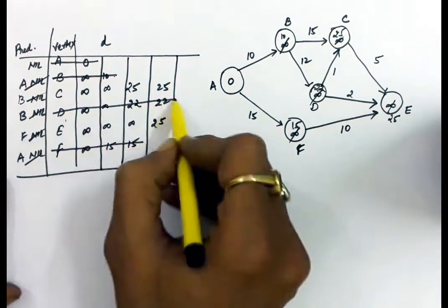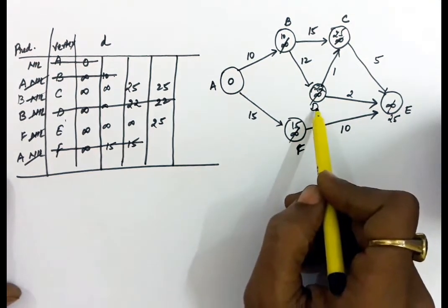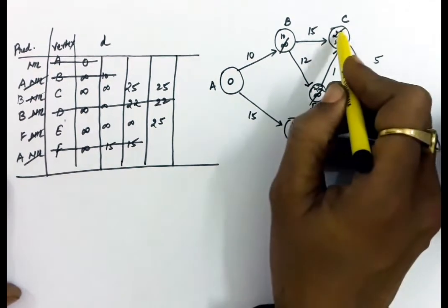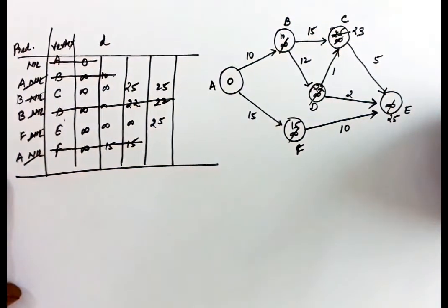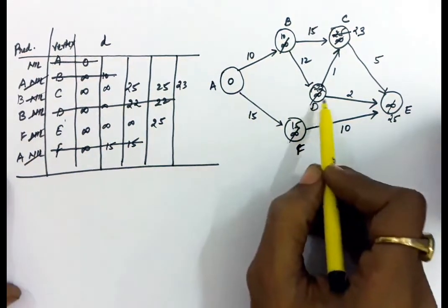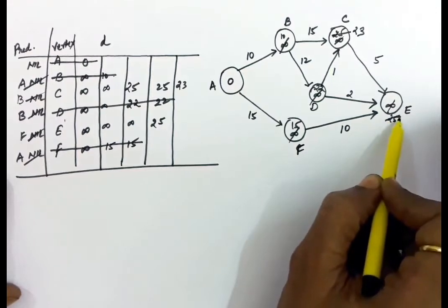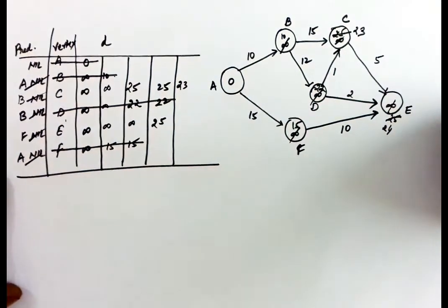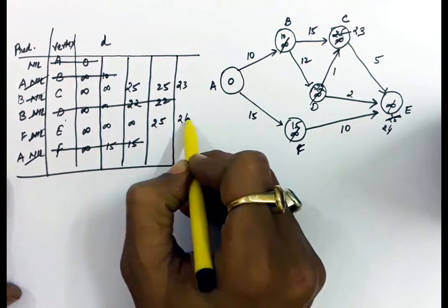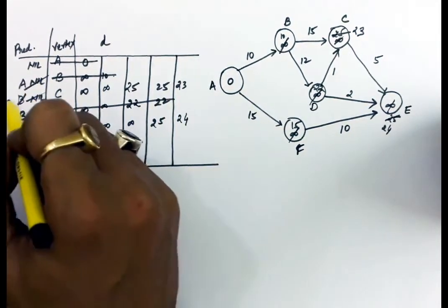Now the minimum is D (distance 22). We explore vertices from D: D to C has cost 1, so 22 plus 1 = 23, which is less than C's earlier distance of 25, so C is updated to 23. D to E has cost 2: 22 plus 2 = 24, which is less than 25, so E is updated to 24. The predecessor of E and the predecessor of C are both updated to D.